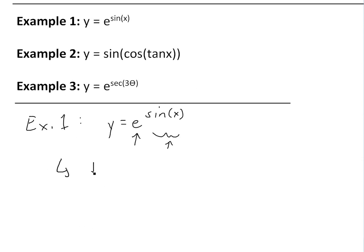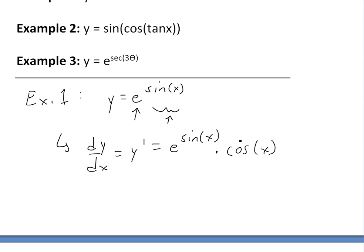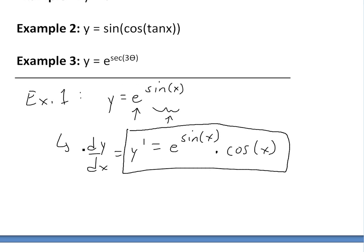When we take the derivative, we take the derivative of the outer function first. So dy/dx, or y prime, equals — the derivative of e to anything is just itself, so we write e to the sine of x. You can see the proof for this in the video link below. Now we multiply by the derivative of the inside function, which is just cosine of x, since the derivative of sine of x is cosine of x. Applying the chain rule, we get this simple derivative. That's our answer for example one.